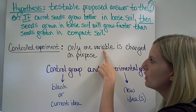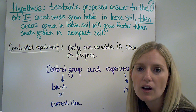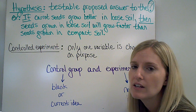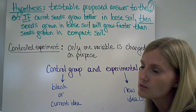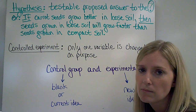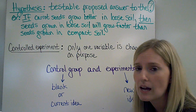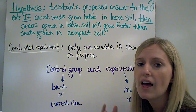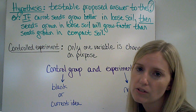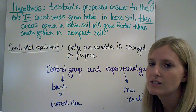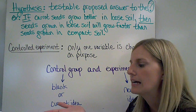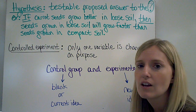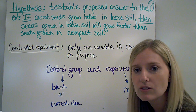I need to set up my controlled experiment to test my hypothesis. A controlled experiment only has one variable that is changed on purpose. A variable is anything that could change in the experiment. With plants, there are lots of variables: the type of water, the amount of water, the temperature of the water — any of those things are considered variables. We only want one of those things to be different between my plant that has compact soil and my plant that has loose soil. In this case, the thing that's different is how compact the soil is.